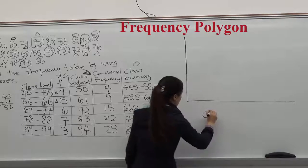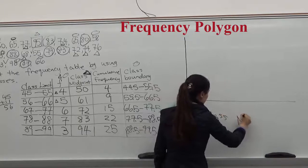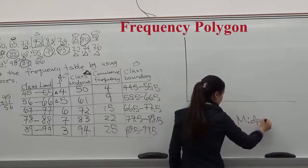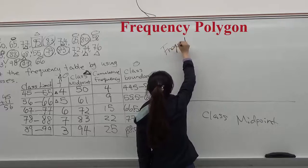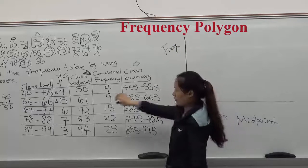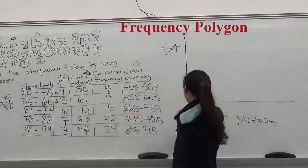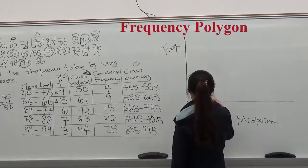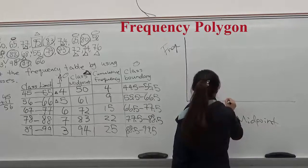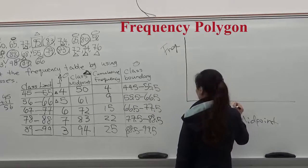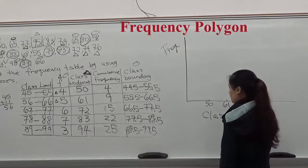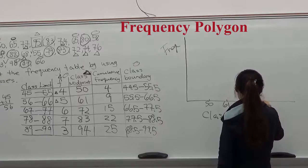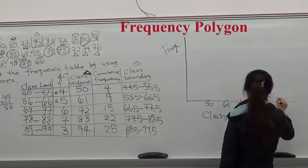The class midpoint goes to the X. And frequency goes to the Y. The first midpoint you have is 50. 50, 61, 72, 83, and 94.